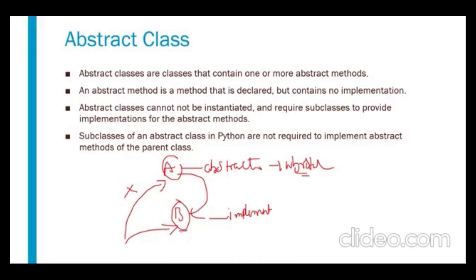Abstract classes contain abstract methods. An abstract method contains only the definition but not the body or implementation. Those method implementations should be done in subclasses, and we cannot create an object for the abstract class. These are the important points to remember about abstract classes.